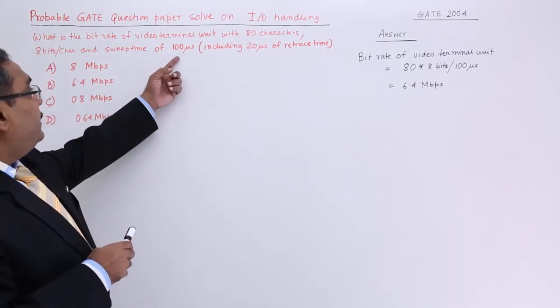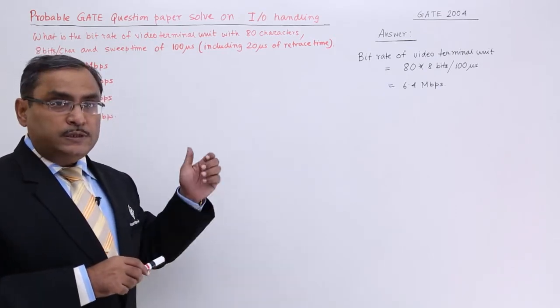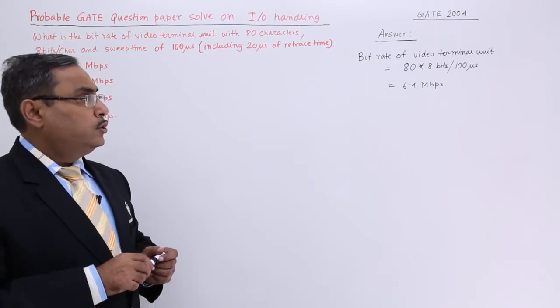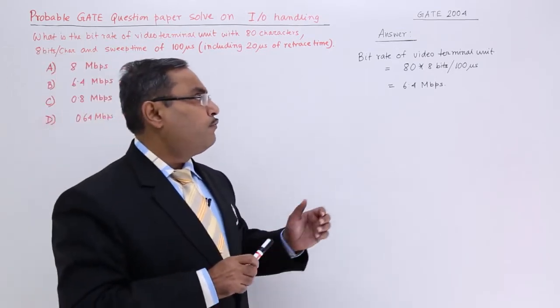And you know that here we are having the swipe time of 100 microseconds. Within this period of time this display will be coming on the screen. Obviously, to calculate the bit rate of the video terminal unit just go for the division.